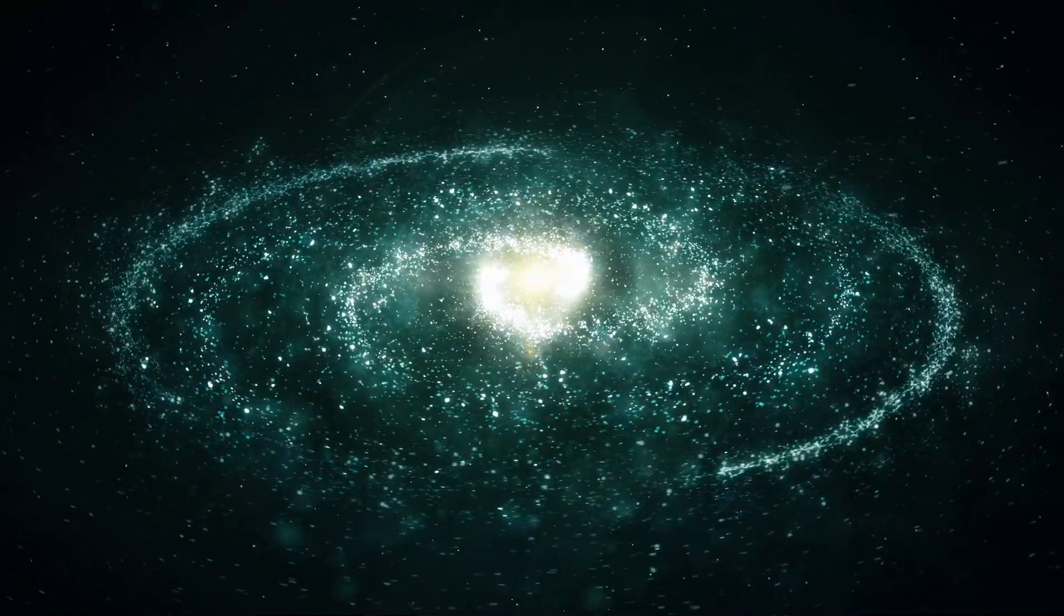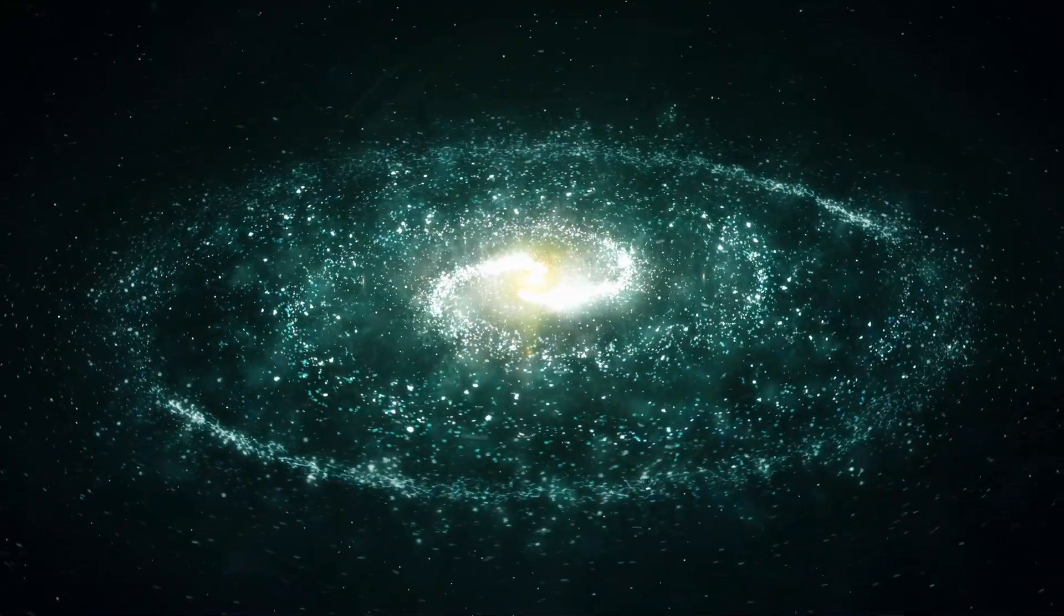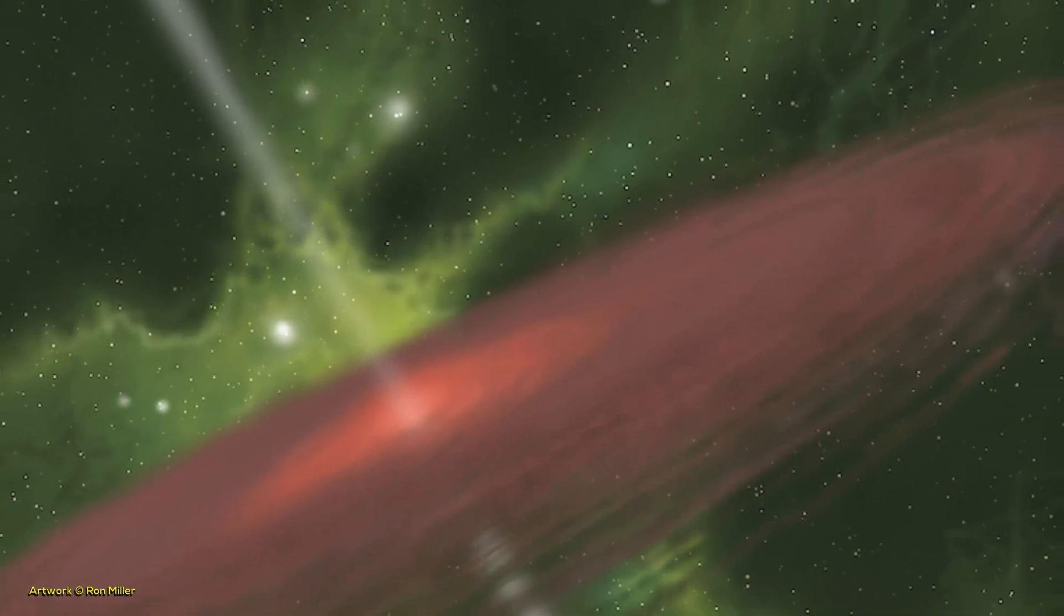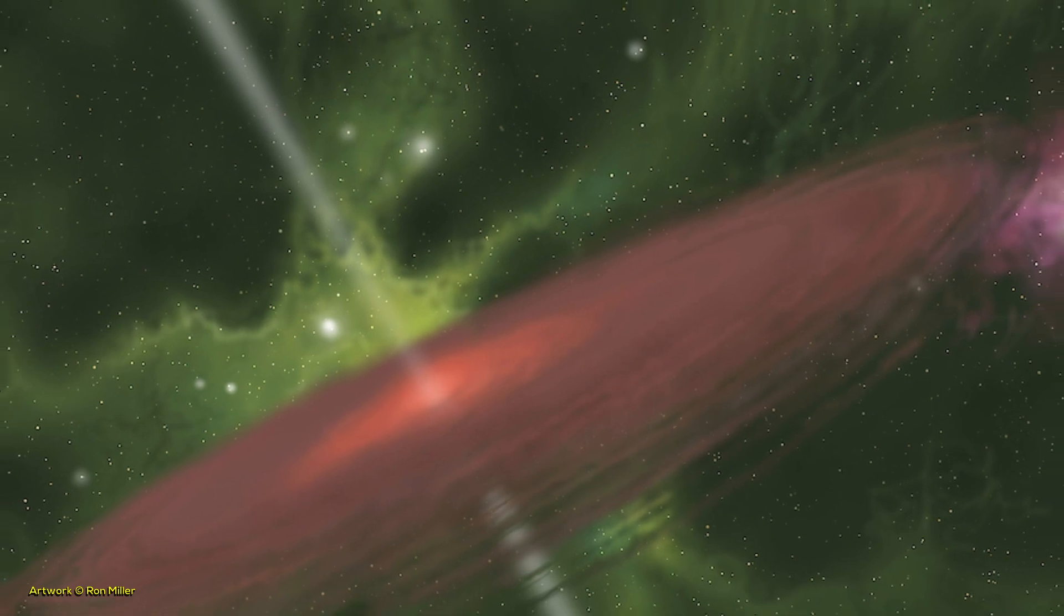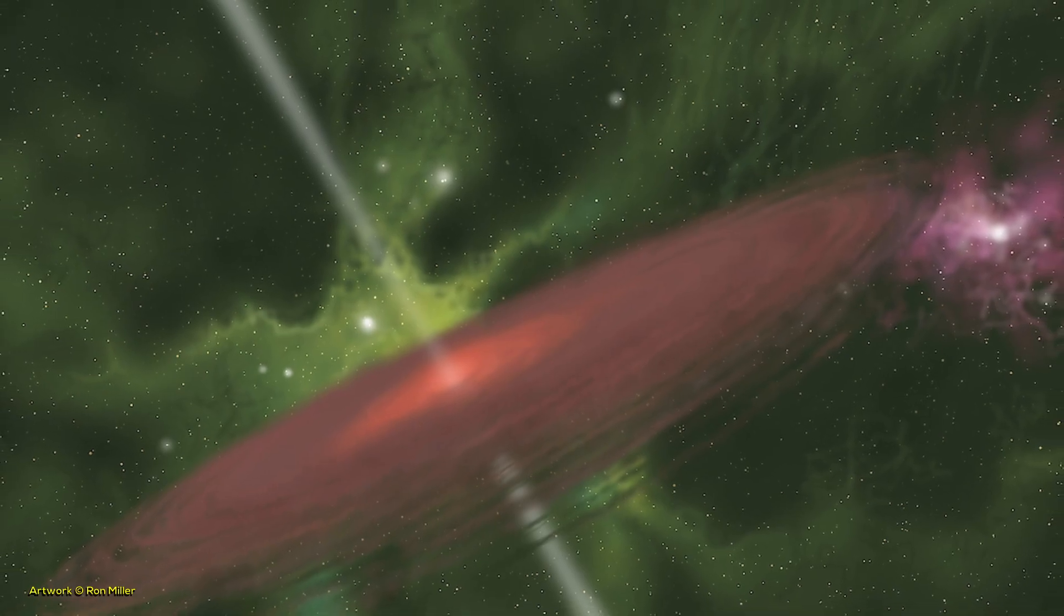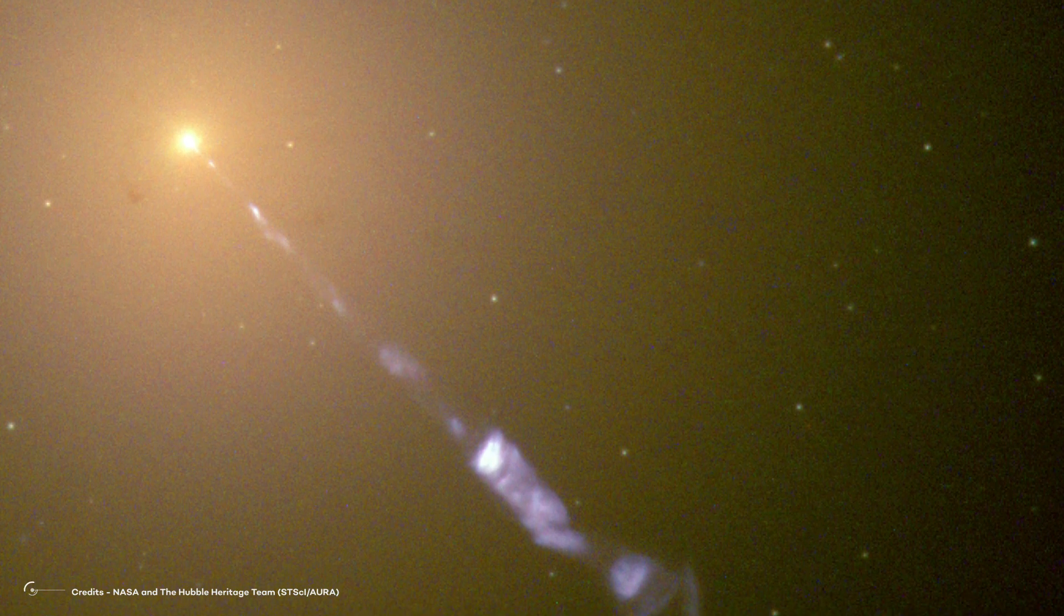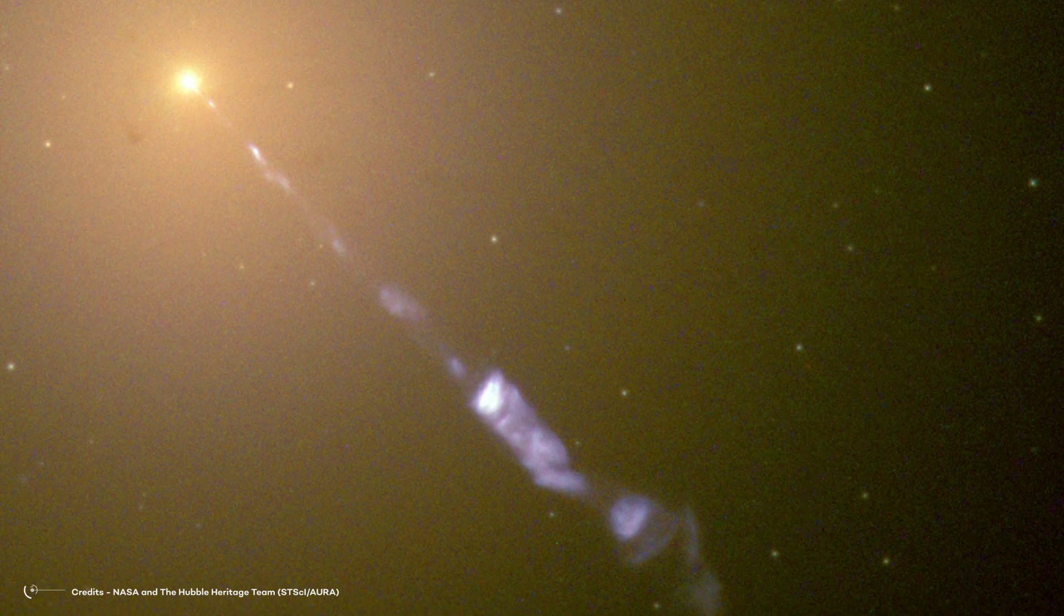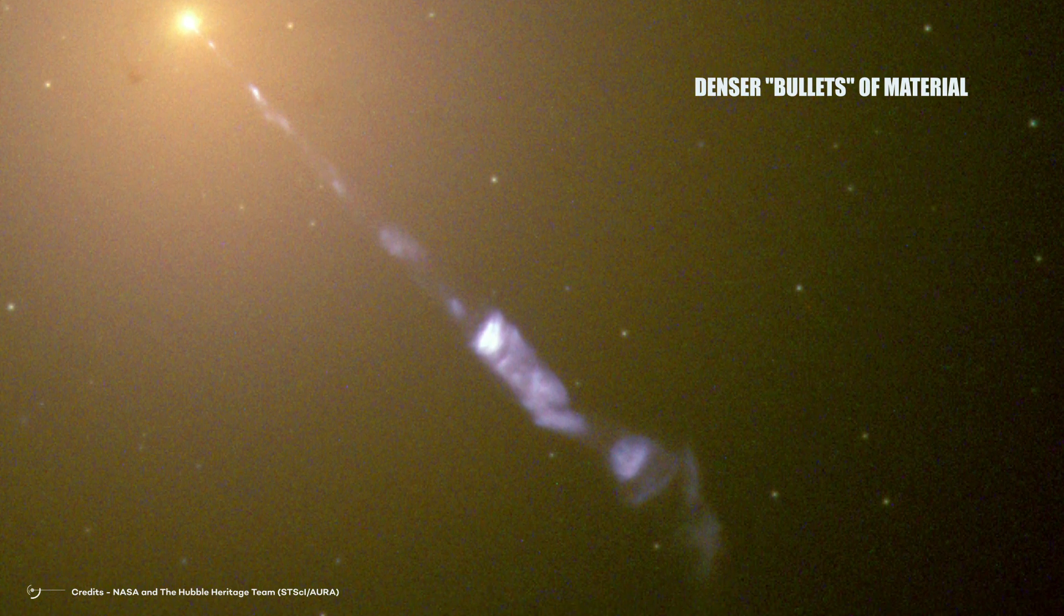Now let's delve into the mechanism behind stellar jets. As material falls onto the protostar from the surrounding accretion disk, the interaction between the magnetic fields of the rotating star and the disk causes the material to change direction. Instead of falling directly onto the protostar, some of this material is ejected outwards from the stellar magnetic poles. Resulting in the formation of stellar jets. However, the accretion process onto the protostar is not always a smooth and consistent flow. Sometimes there are sudden fluctuations in the rate of material falling onto the protostar. When there is a rapid increase in the accretion rate, it leads to the formation of denser bullets of material within the jets.